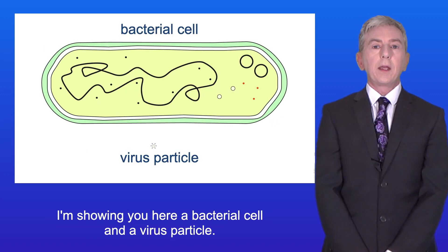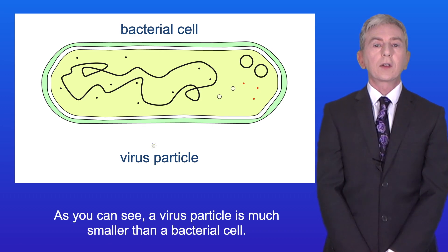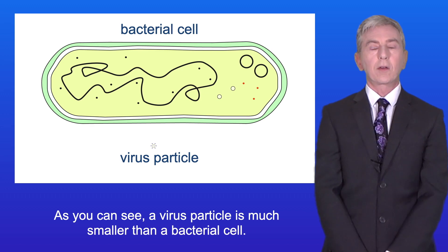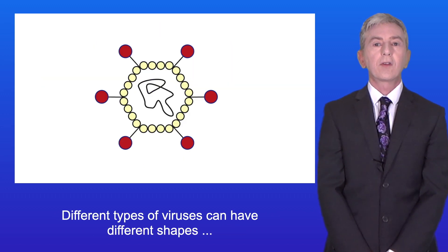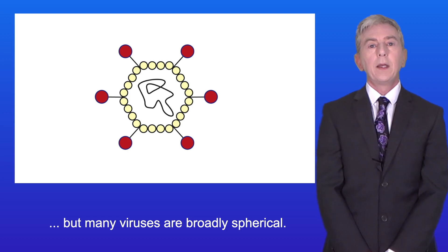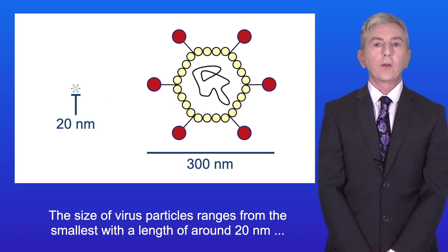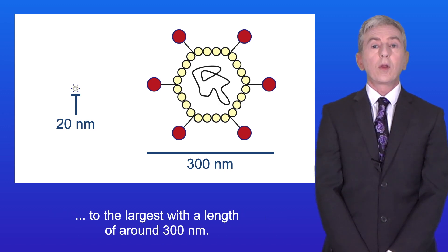I'm showing you here a bacterial cell and a virus particle, and as you can see a virus particle is much smaller than a bacterial cell. Different types of viruses can have different shapes but many viruses are broadly spherical. The size of virus particles ranges from the smallest with a length of around 20 nanometers to the largest with a length of around 300 nanometers.